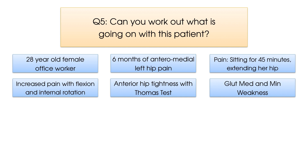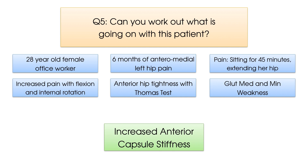What actually happened to this patient was that they were experiencing increased capsular stiffness in the anterior aspect of their left hip. The anterior stiffness leads to difficulty in extending the hip, and can explain why her Thomas test demonstrated anterior hip tightness. Sitting for long periods at a desk can promote hip flexor tightness because of the position the hip remains in, which can also lead to anterior joint stiffness.